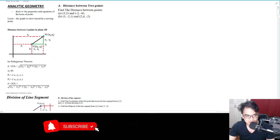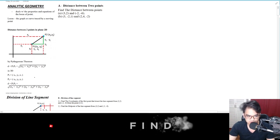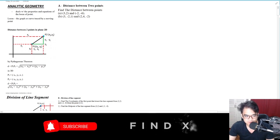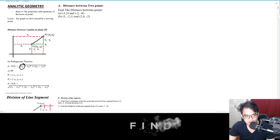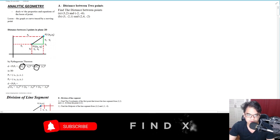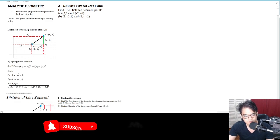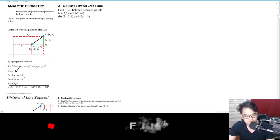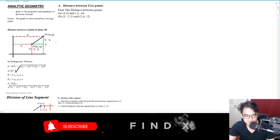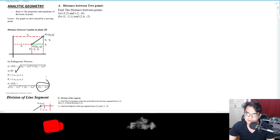You can also interchange those as long as you are consistent with the signs and the subscripts. It can also be (x1 - x2)² plus (y1 - y2)². If you write x2 first, this must be x2. If you write x1 first, therefore the second one will be x1 also. For 3D, all you have to do is just add the third coordinate, which is z, so it becomes (z2 - z1)².